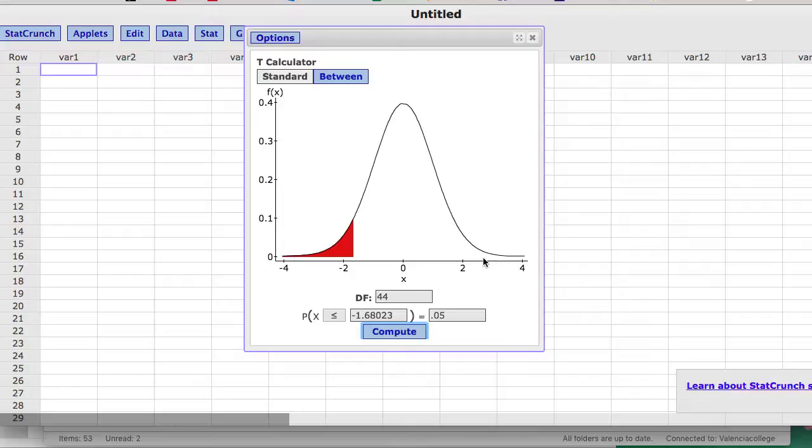So as I've discussed in class, I think the quickest way to find critical values is to use the table. But if the degrees of freedom isn't in the table, then this would really be the best approach to use.